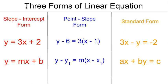So those three forms of equation, just to see that you have those again in front of you: slope-intercept form, y = mx + b; point-slope form, y - y₁ = m(x - x₁); and standard form, ax + by = c.